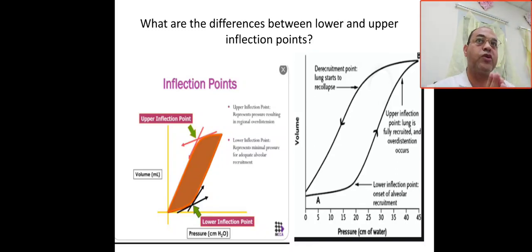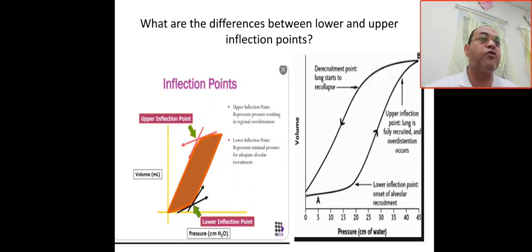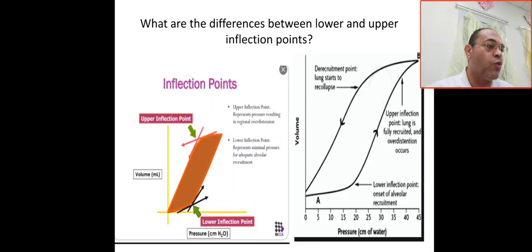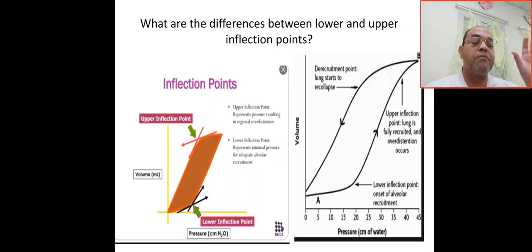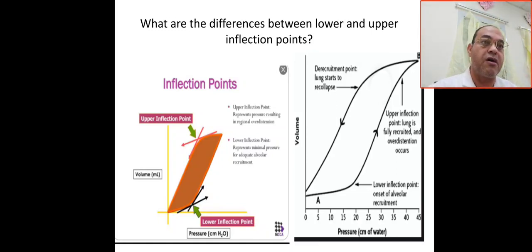The upper inflection point represents the recoiling characteristic — full recruitment and overdistension. Once you give even a huge pressure, it will not give you any additional volume. It may harm the patient, leading to barotrauma or air trapping.